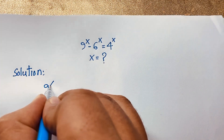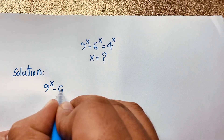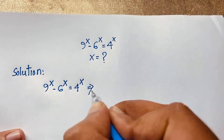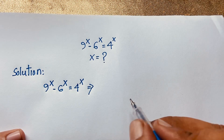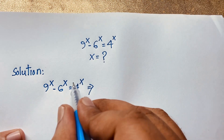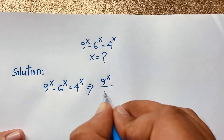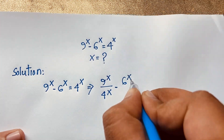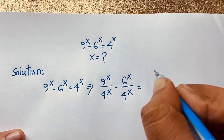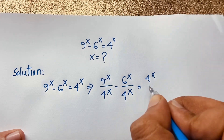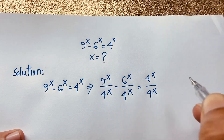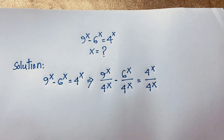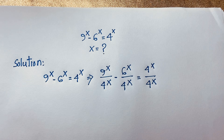Our question is 9 to the power x minus 6 to the power x is equal to 4 to the power x. Now I divide both sides by 4 to the power x. So it will be: 9 to the power x over 4 to the power x, minus 6 to the power x over 4 to the power x, is equal to 4 to the power x over 4 to the power x.